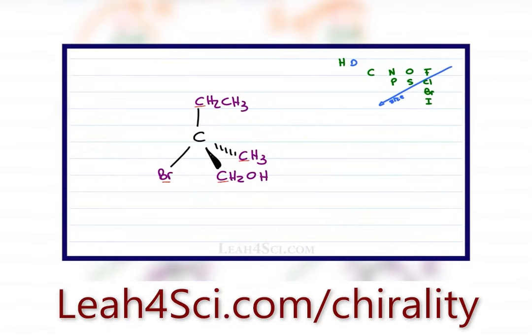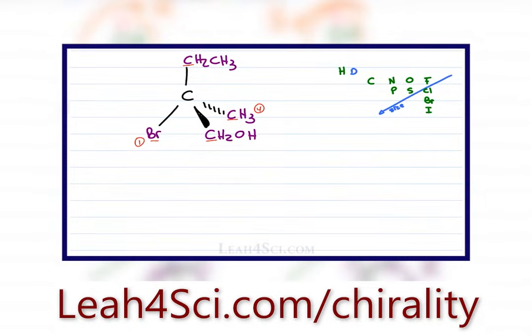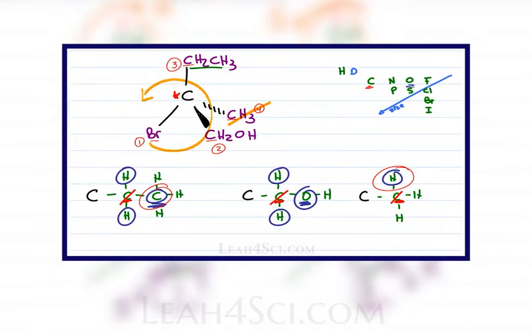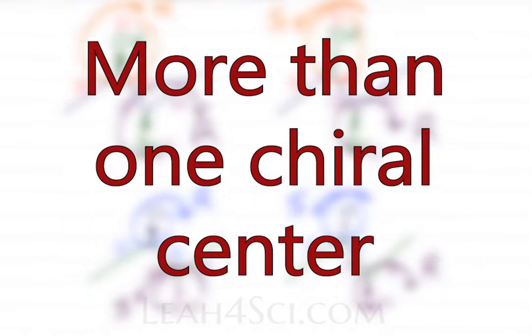In previous videos at leah4sci.com/chirality, linked below, we looked at how to find chiral centers and designate R and S no matter how it's presented. In this Leah4Sci video, we'll look at what happens when the molecule has more than one chiral center.